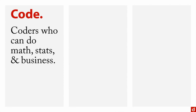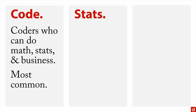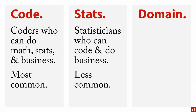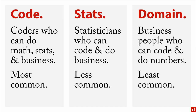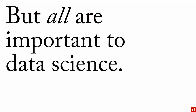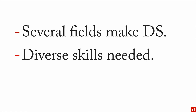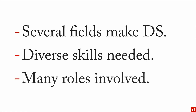A couple of backgrounds people come from: first, coders who can do math, stats, and business — probably the most common. Second, statisticians who can code and do business — less common. Third, domain experts — for instance, business people who can code and do numbers — the least common. But all of these are important to data science. In sum: several fields make up data science, diverse skills and backgrounds are needed, and there are many roles involved.